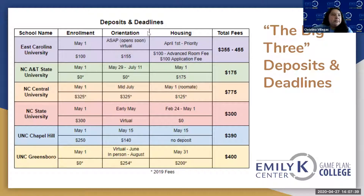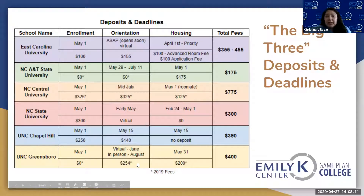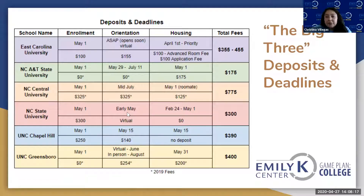Orientation varies per school on how it will be conducted. More than likely, they will all be virtual unless anything changes in the near future. Some schools have already opened orientation registration, while others, like East Carolina, are opening soon. UNC Greenville projects in-person orientations in August, but that's still up in the air. Orientation registration deadlines range from early May to mid-July depending on the school, so register as early as possible.